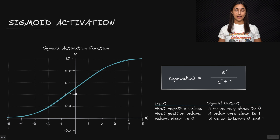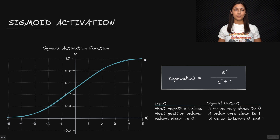we can see it takes on this kind of S-shaped curve, where we have the bottom of the curve getting asymptotically close to zero, whereas the top is getting asymptotically close to one.